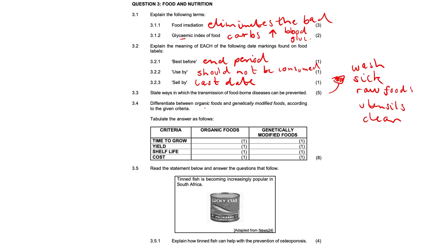3.4 — differentiate between organic foods and genetically modified foods. Organic foods take a long time to grow — nature must run its course. They have a low yield, a natural but short shelf life, and higher production costs, making them more expensive. Genetically modified foods, on the other hand, take a short time to grow with a really large yield, so more people can be fed. They have a very long shelf life, lower production costs, and are more affordable and accessible to everyone. However, organic foods are a lot healthier than genetically modified foods.